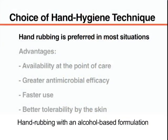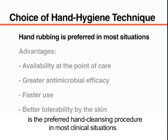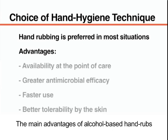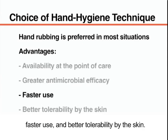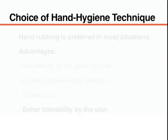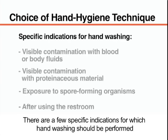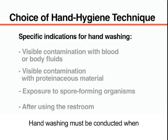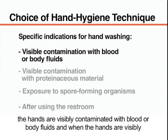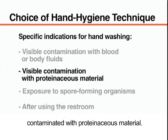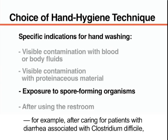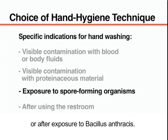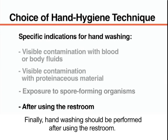Hand rubbing with an alcohol-based formulation is the preferred hand cleansing procedure in most clinical situations. The main advantages over soap and water include availability at the point of care, greater antimicrobial efficacy, faster use, and better tolerability by the skin. However, hand washing must be conducted when hands are visibly contaminated with blood, body fluids, or proteinaceous material, after exposure to spore-forming organisms — for example, after caring for patients with diarrhea associated with Clostridium difficile or after exposure to Bacillus anthracis — and after using the restroom.